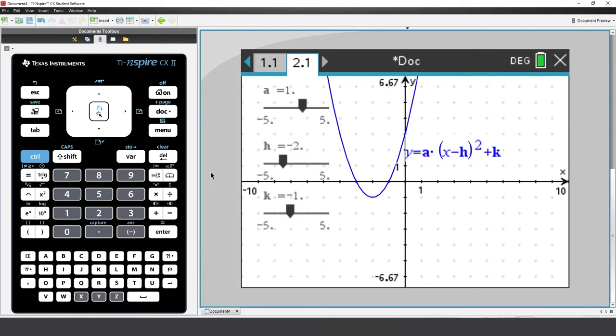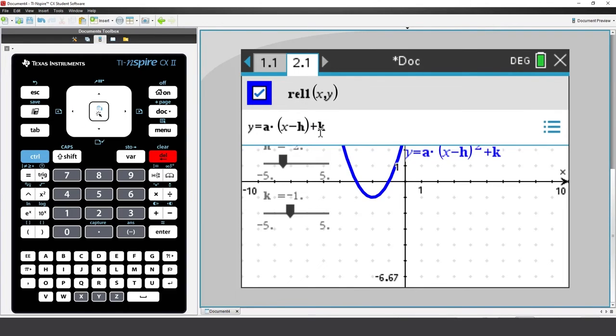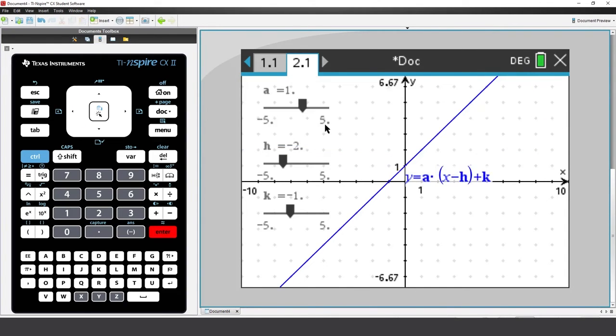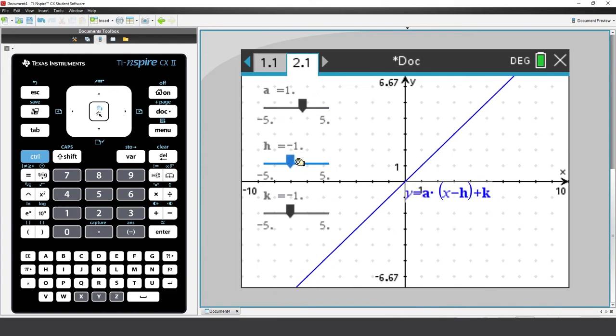Now let's see what happens if the squared sign is removed. Once again we see a linear function. And A changes the gradient. But notice that it no longer rotates around the y-intercept. In fact, it's rotating around the point h, k.